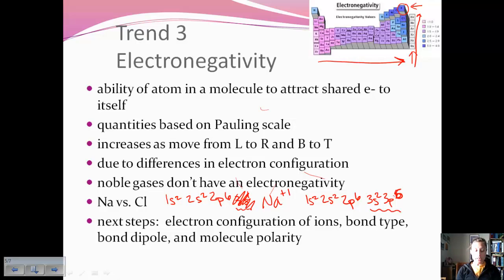So from here, we're going to move on to electron configuration of ions, which we briefly touched on already. We're going to look at how electronegativity plays a role in determining bond type, bond dipole, and then also molecular polarity and molecular geometry.